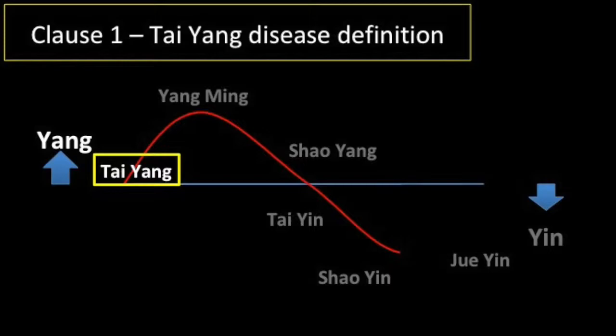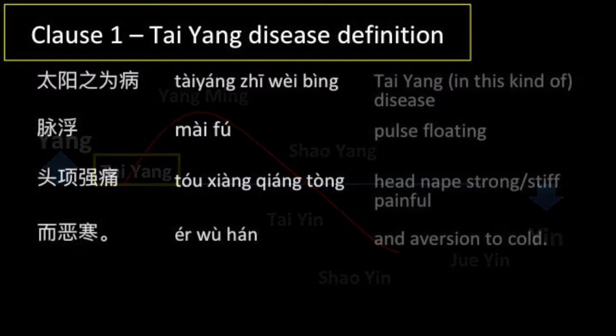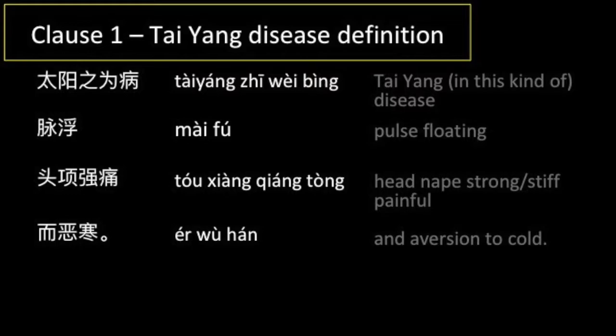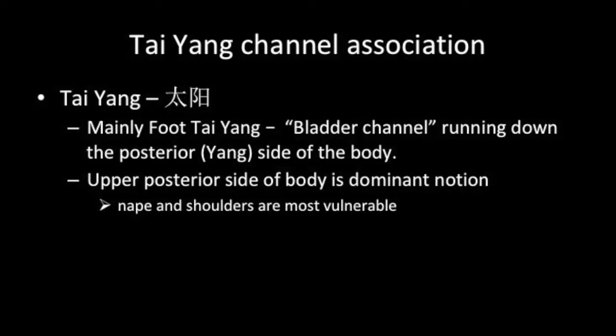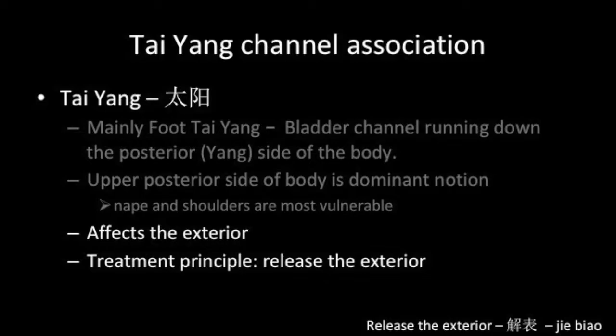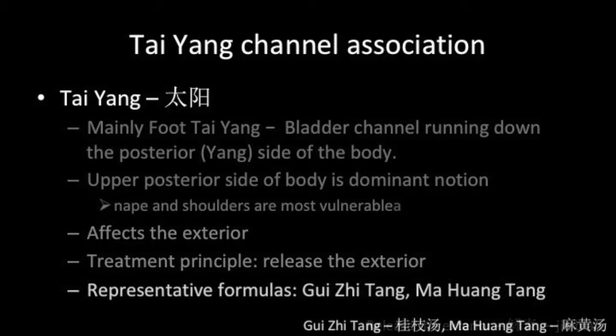Here are the definitions of the channel diseases according to the text. Clause 1, Taiyang channel disease definition: Taiyang zhi wei bing, mai fu, tou xiang jiang tong er wu han. In Taiyang disease, the pulse is floating, the head and nape are stiff and painful, and there is aversion to cold. This stage is mainly associated with the foot Taiyang or bladder channel, which runs down the posterior or yang side of the body. The focus is the exterior of the body being attacked by a pathogen, and the treatment principle is to release the exterior. The representative formulas are Gui Zhi Tang and Ma Huang Tang.